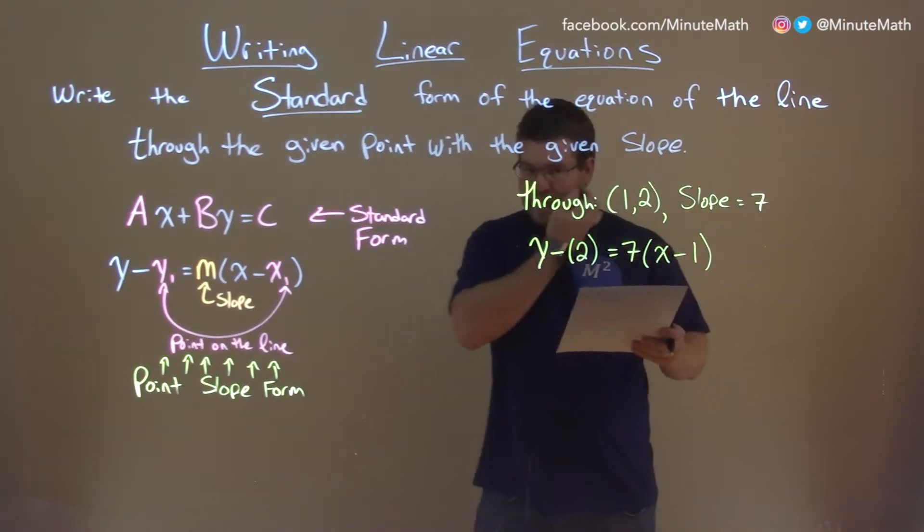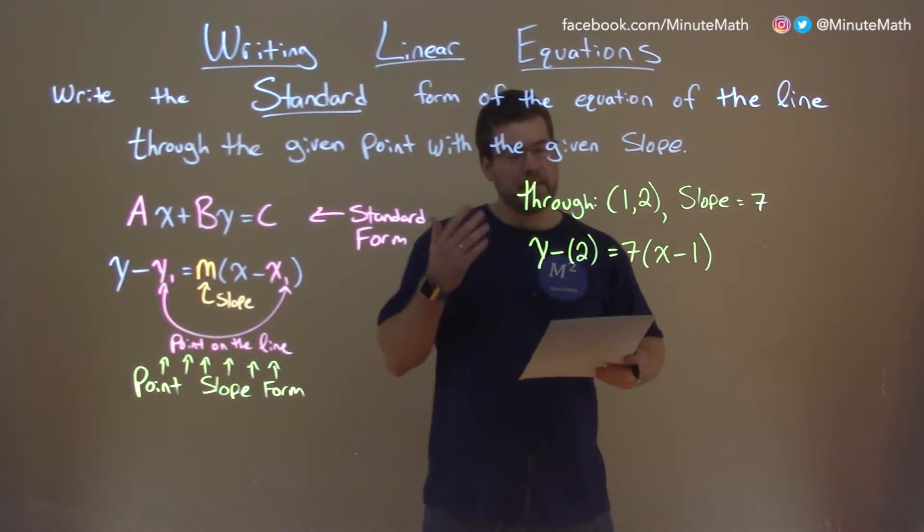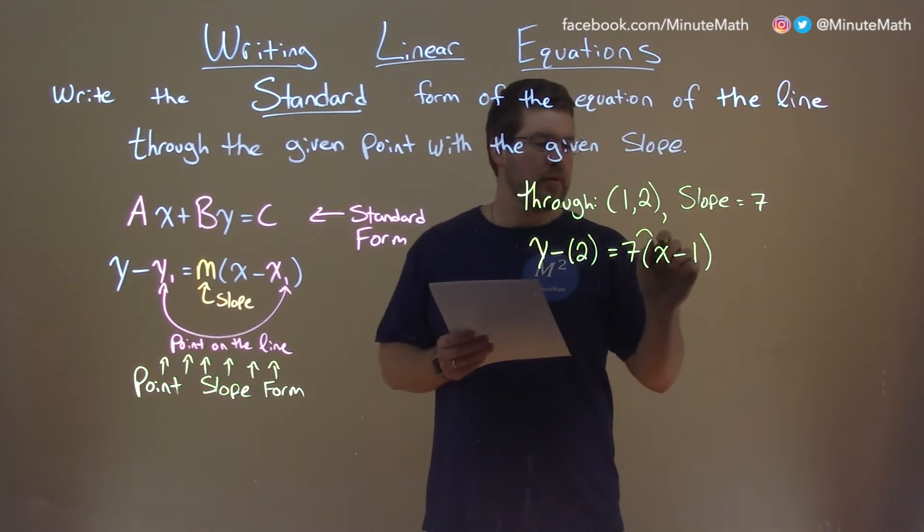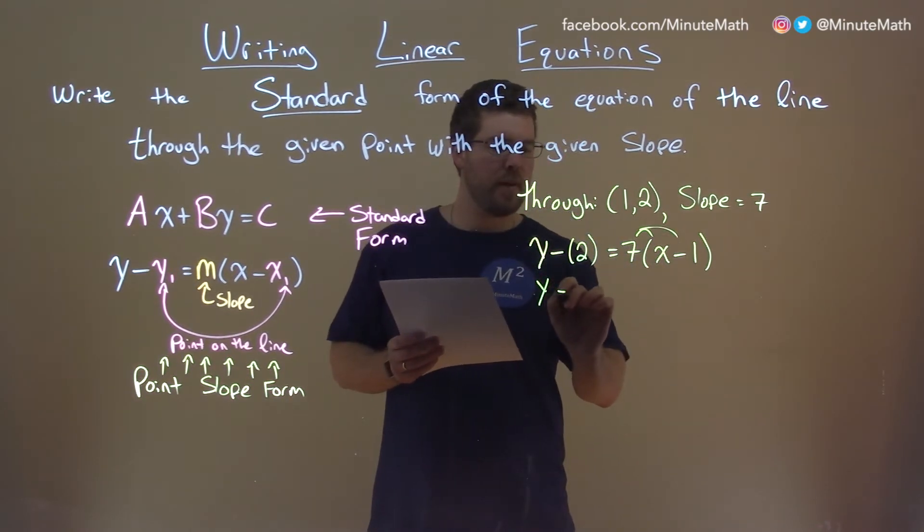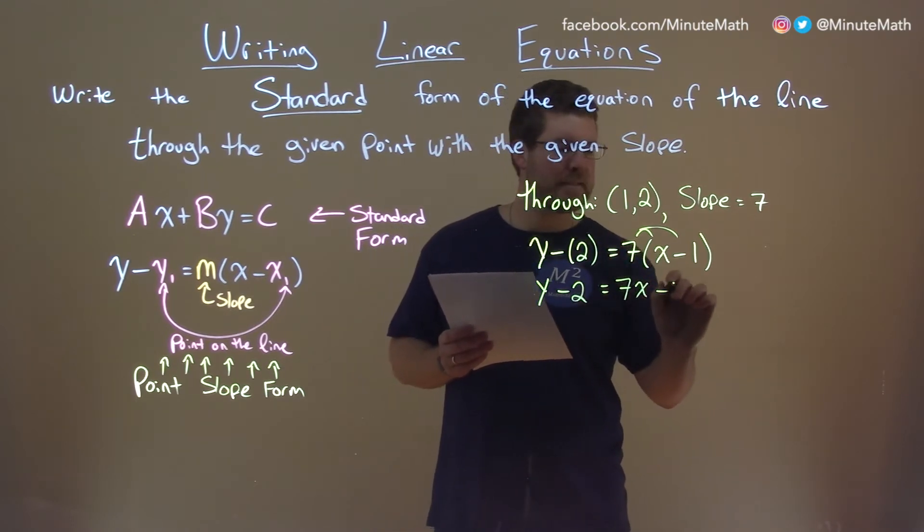And now, what we want to do is really try to get all the variables we can to one side. So, that's going to involve some math here, algebra. Distribute the 7 to both parts here. So, let's bring down this, y minus 2 equals 7x minus 7.